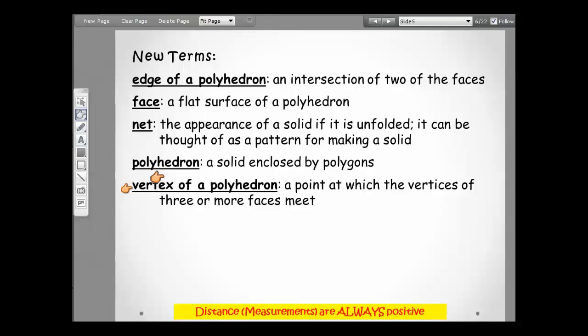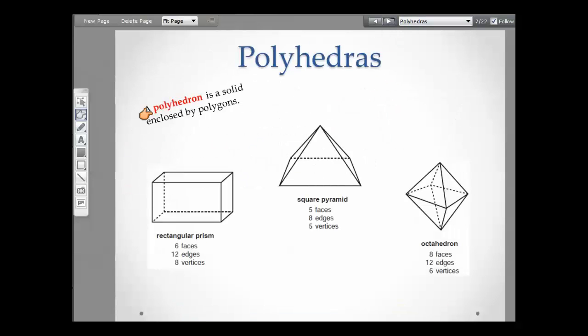The vertex of a polyhedron is a point at which the vertices of three or more faces meet. So we said a polyhedron is a solid enclosed by polygons, so here's some examples. This is all the same old stuff, just new words.